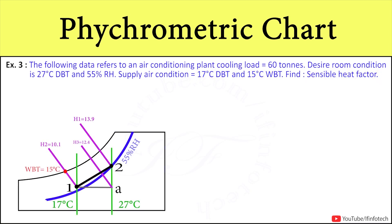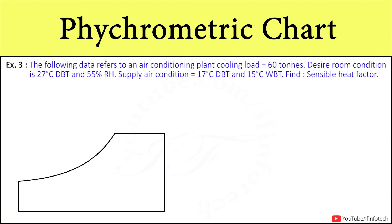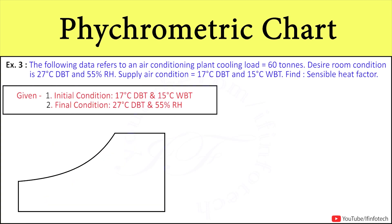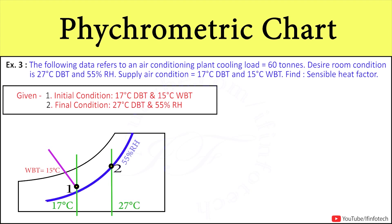So here we have to plot the process on the psychrometric chart. Let's see how it is done. First, we will write down the data which has been provided. The given data for properties of air at initial condition is 17°C dry bulb temperature and 15°C wet bulb temperature. And properties of air at final condition is 27°C dry bulb temperature and 55% relative humidity.